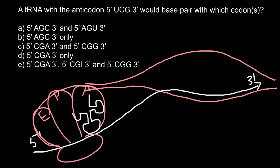Now we have to think about the orientation of this tRNA. If you would mentally stretch this single-stranded RNA, you have to understand that messenger RNA and tRNA also have to have orientation, just like double-stranded DNA.